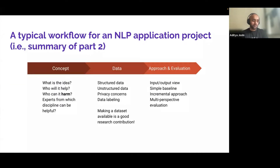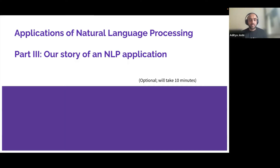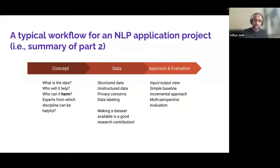With this typical workflow, I'll move to the third part: our story of an NLP application. This describes a paper I published during my PhD many years ago. The method is not state of the art in NLP, but I want to highlight how we used the three-step framework in practice. The title of this NLP application was 'Automatic Prediction of Drunk Texting,' published at ACL 2015 with Abhijit, Balamurli, and my PhD advisors Pushpak Bhattacharya and Mark Carman.